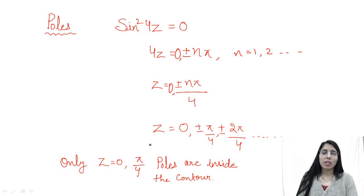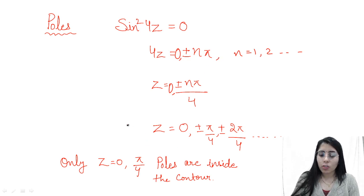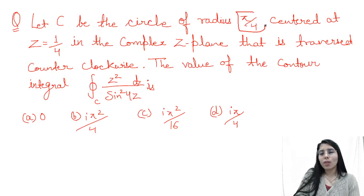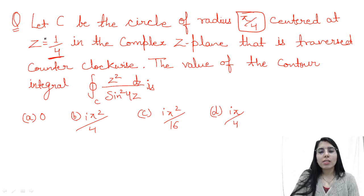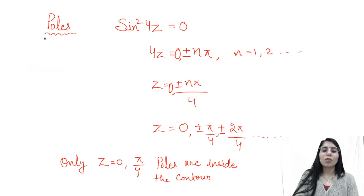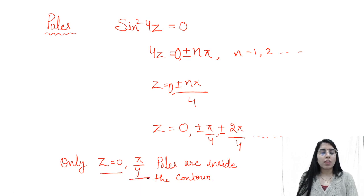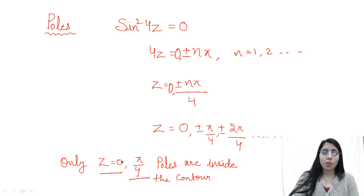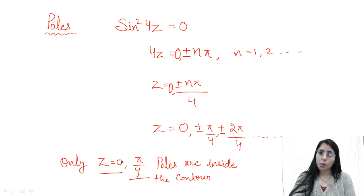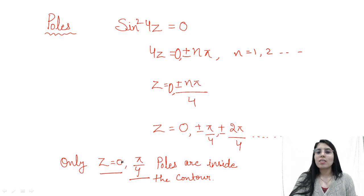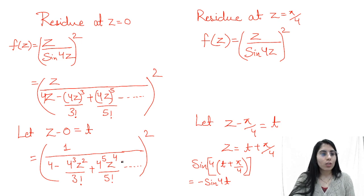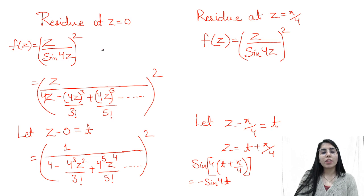Once we have the values of z, we identify which poles lie within the contour. The radius of the circle is π/4 and the center is 1/4. If you observe, only two poles will be lying within the contour: z = 0 and z = π/4. We have to find the residue at these poles. The other poles, if you check as per the circle given, are not lying within the contour. Hence we will not find the residue at those poles.